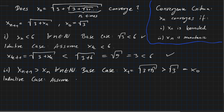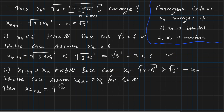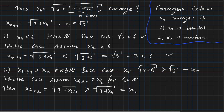For the inductive case, assume x_{k+1} > x_k for k in the natural numbers. Then x_{k+2} = √(3 + x_{k+1}) by definition. Using the inductive hypothesis that x_{k+1} > x_k, we can estimate this to be greater than √(3 + x_k), which by definition is exactly x_{k+1}. So x_{k+2} > x_{k+1}, which proves x_{n+1} > x_n for all natural numbers by induction.